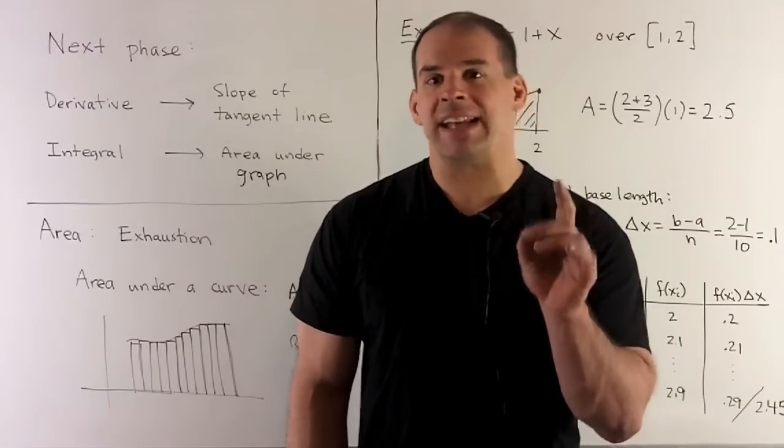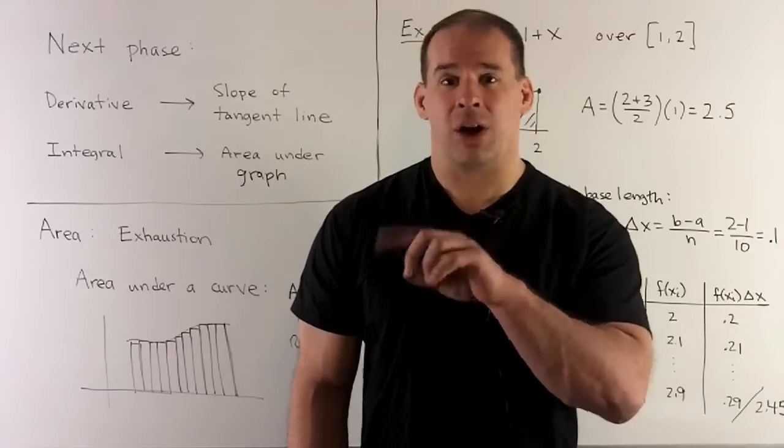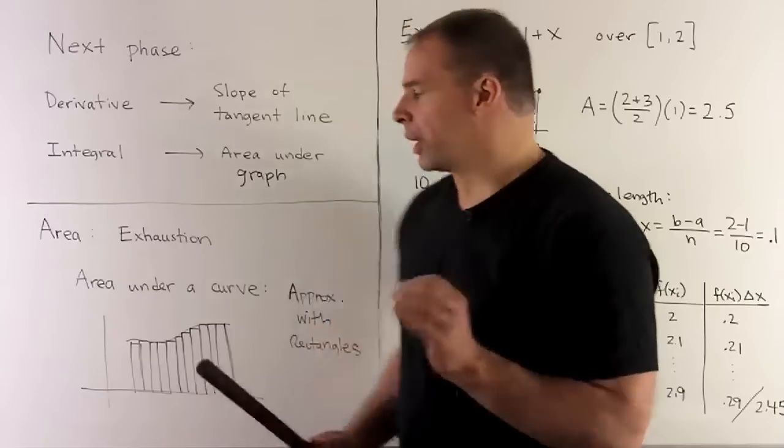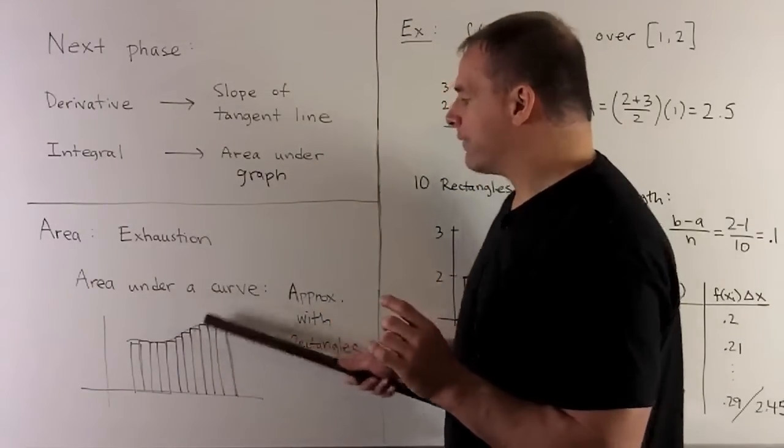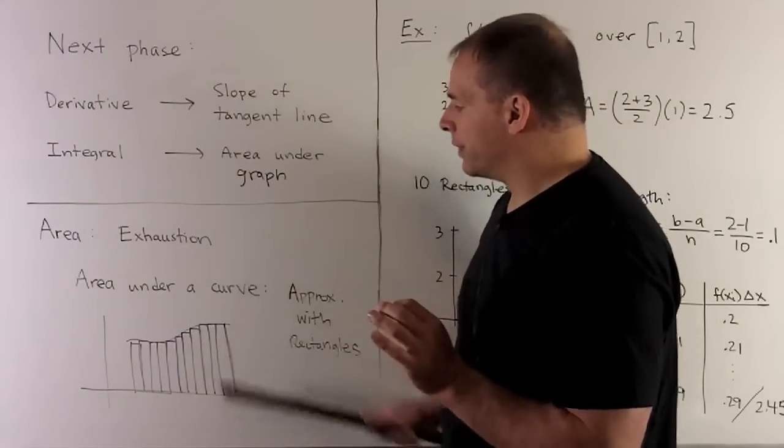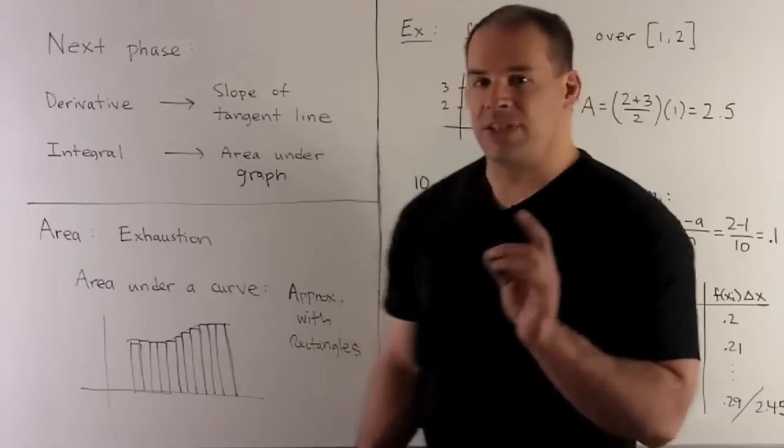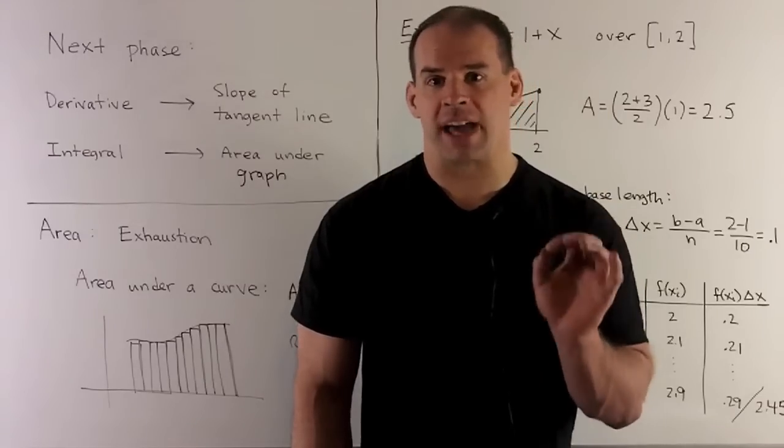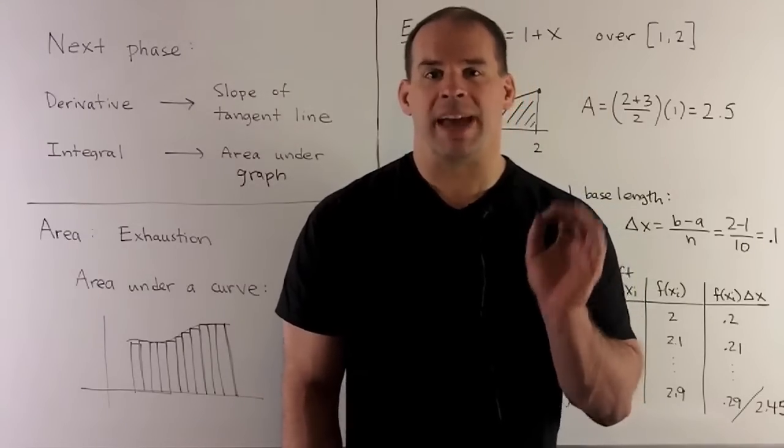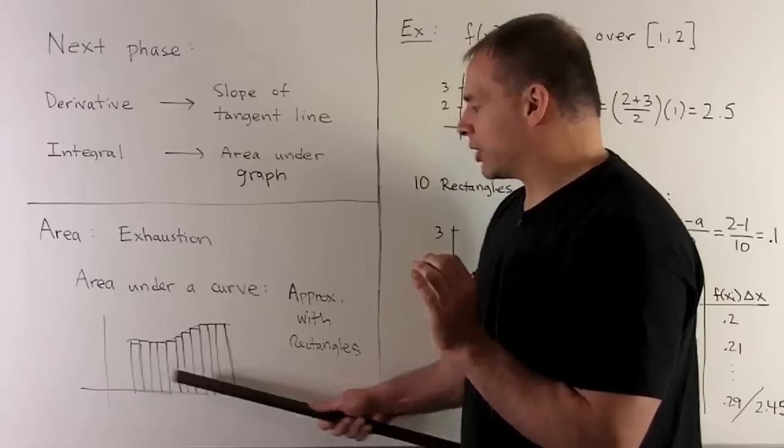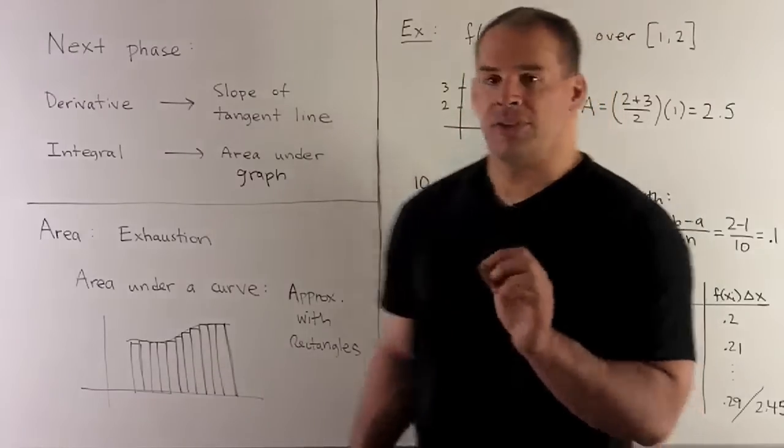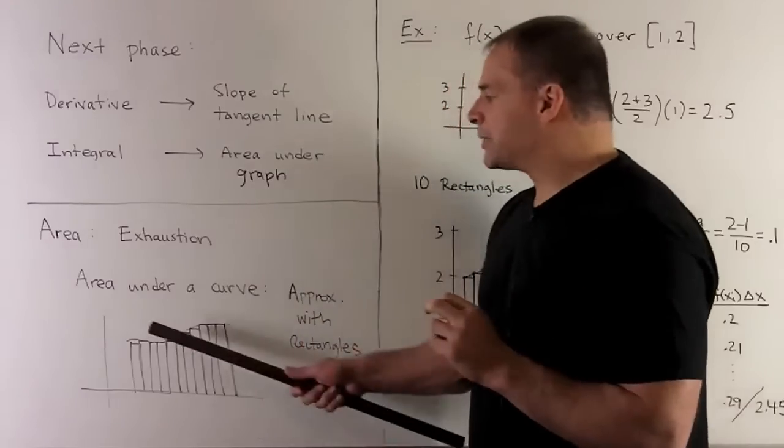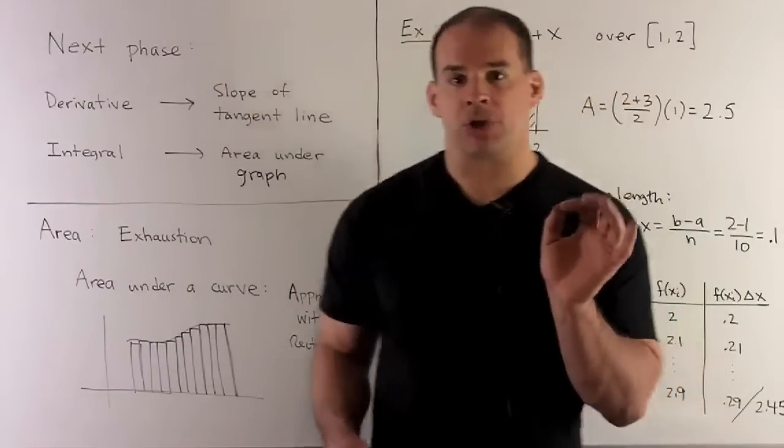Now, we're going to take that idea and apply it to the area under the graph of a function between two points. So here's our picture. We draw in our graph, and then we mark off two points. And the simple regions that we use to fill up our complicated region are just going to be rectangles. As we let our rectangles get smaller and smaller, by letting the bases get thinner and thinner, you'll note that the gaps at the top are also going to get smaller and smaller.